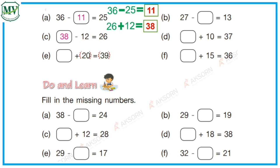Letter E. Subtract 20 from 39. 39 minus 20 equals? 19. So, the missing number is 19. Very good!